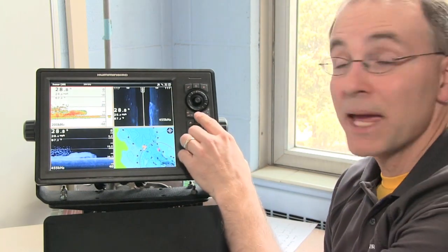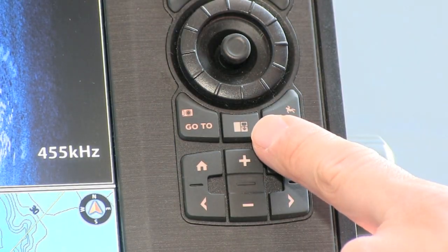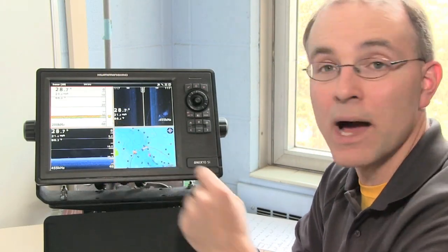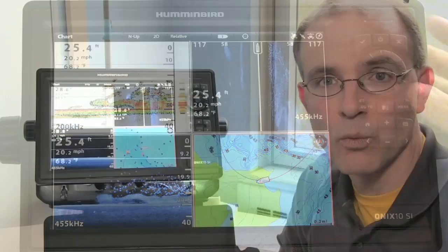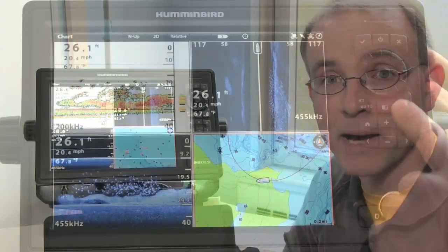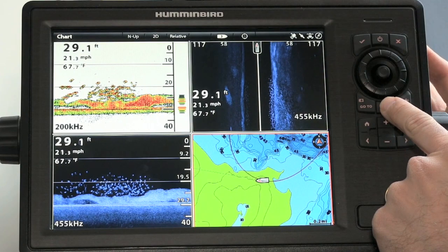I can also focus on individual panes of data using the pane button on the control pad. I'll simply push the pane button until the yellow outline box moves to the pane of data that I'm interested in. Once the pane is highlighted by the yellow box I'll press and hold the pane key.